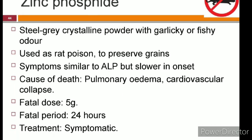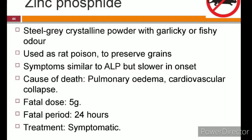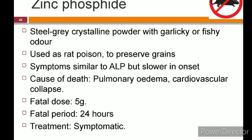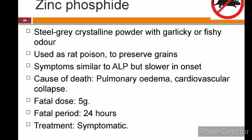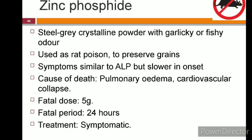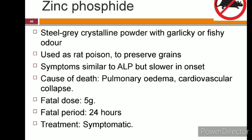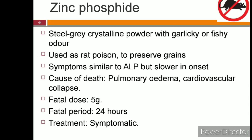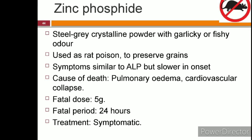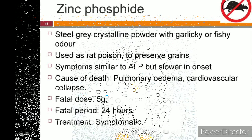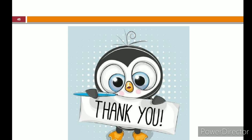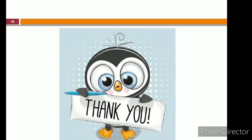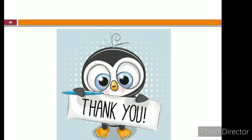The last topic of agricultural poisoning is zinc phosphide — a steel-gray crystalline powder with a garlicky or fishy odor, used as rat poison and to preserve grains. Symptoms are similar to aluminium phosphide but slower in onset. The cause of death is pulmonary edema and cardiovascular collapse. The fatal dose is 5 grams and treatment is symptomatic. We have now covered everything about agricultural poisoning. Subscribe to our channel to get instant notifications on new updates. Thank you.